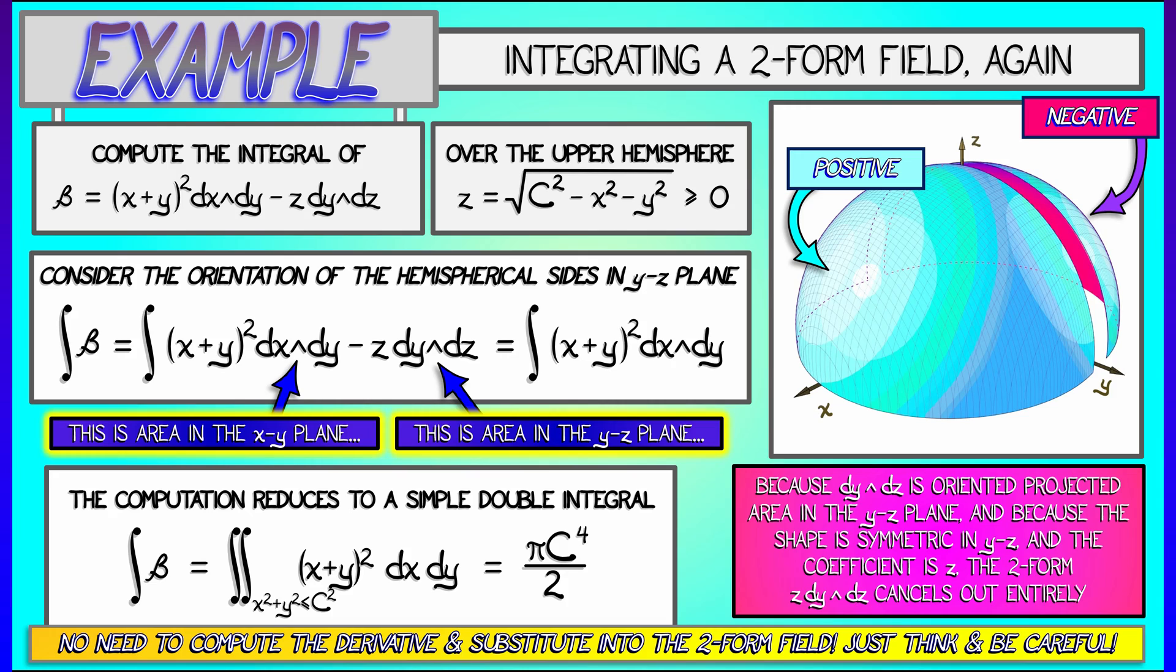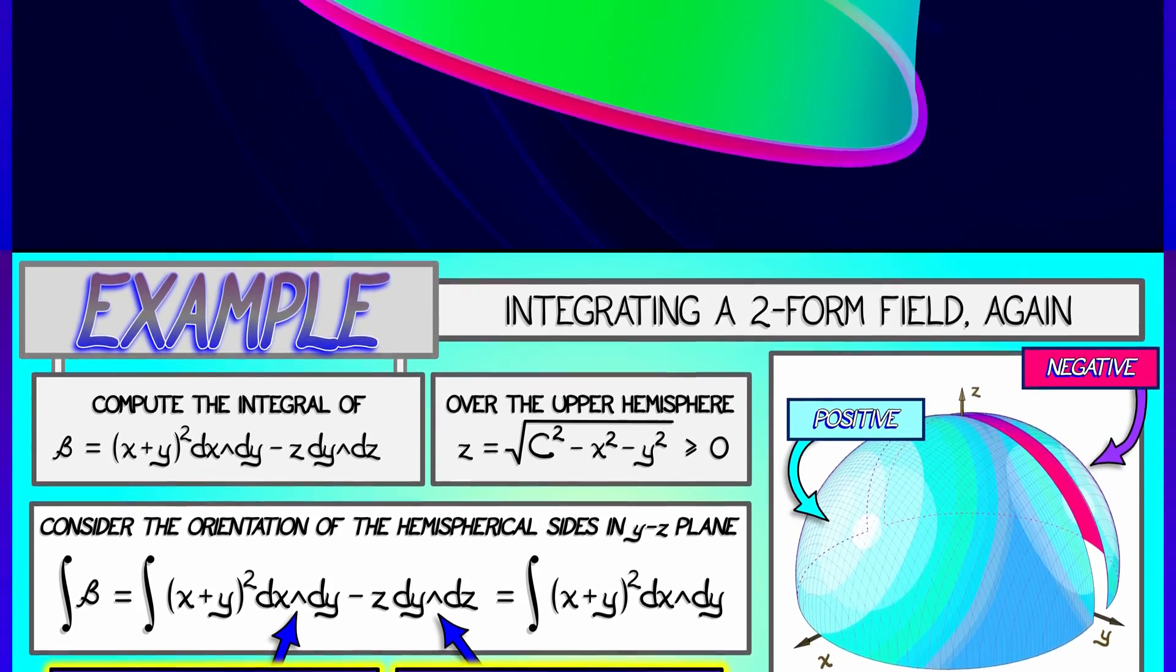No derivatives of the parametrization, no two-forms, no nothing like that. So we're all good, right? Everything is going to be great.